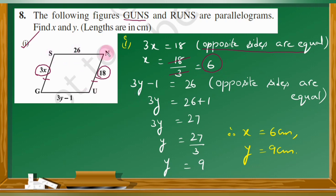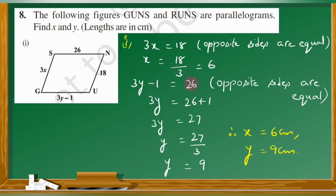Next, SN is equal to GU because opposite sides are equal in a parallelogram. SN is 26, so GU is also 26. Therefore 3y minus 1 equals 26. So 3y equals 27, and y equals 27 divided by 3, giving y equal to 9. Therefore x is equal to 6 centimetres and y is equal to 9 centimetres.